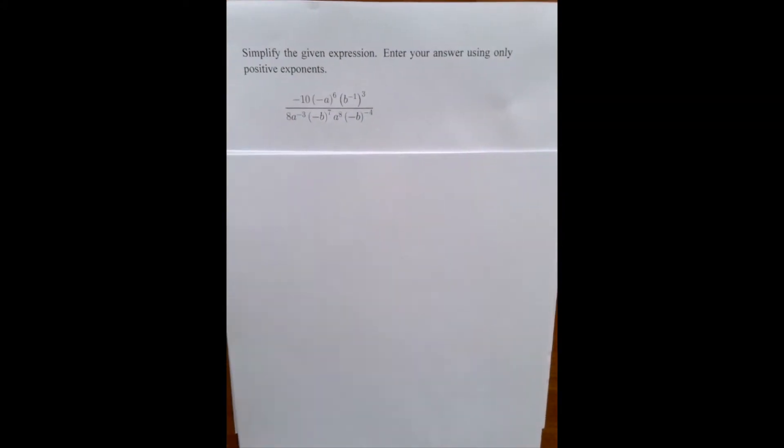So first, I can simplify between negative 10 and 8. They are both divisible by 2. So minus 5 here, 4 here.